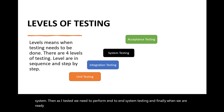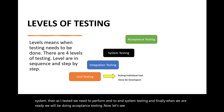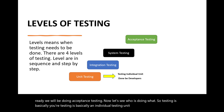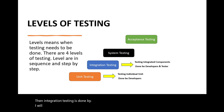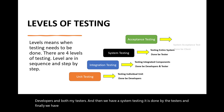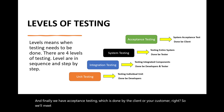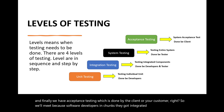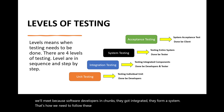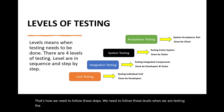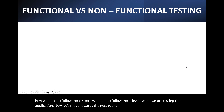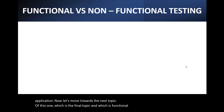The third level is system testing — when all units are integrated and form a complete system, testers perform end-to-end system testing. Finally, acceptance testing is done when the system is ready and is performed by the client or customer. In terms of who does what: unit testing is done by developers, integration testing by both developers and testers, system testing by testers, and acceptance testing by the client.